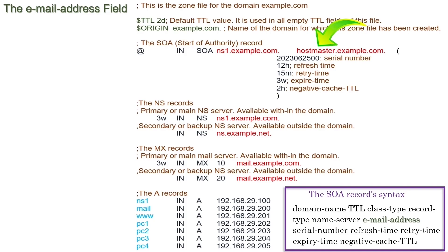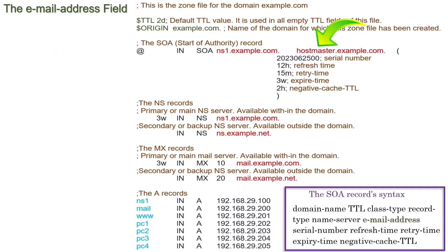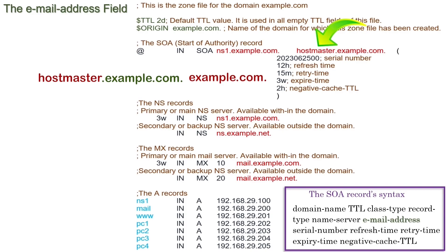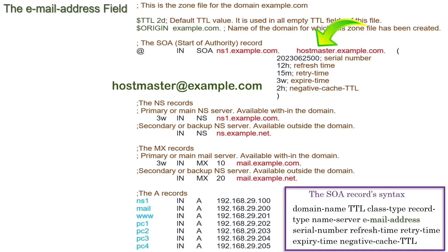This field defines the administrative email address of the domain. You can use any valid email address in this field. Generally, administrators use the email address 'hostmaster' here. In other configuration files, the @ symbol is used as the separator in the email address, but in a zone file, the @ symbol has a special meaning — DNS replaces it with the origin directive's value. To avoid confusion, DNS uses the dot separator. For example, the email address hostmaster.example.com is read by DNS as hostmaster@example.com.